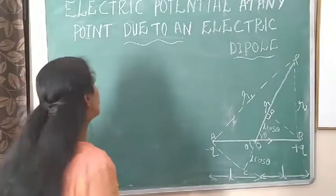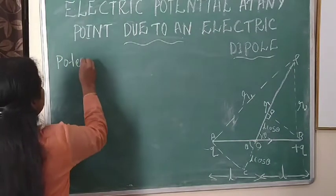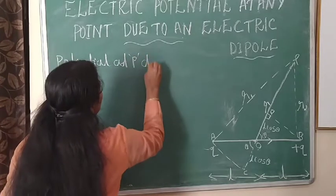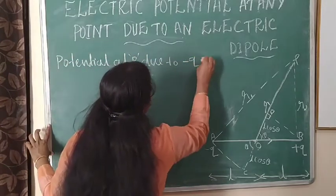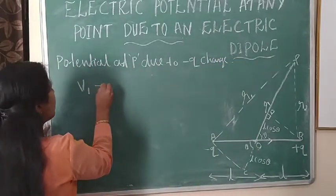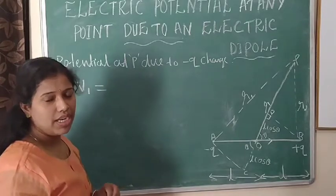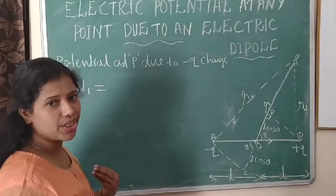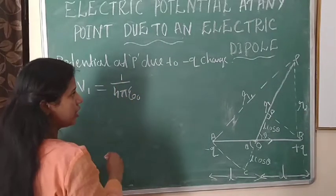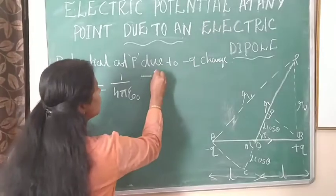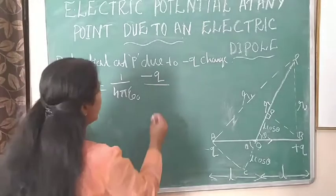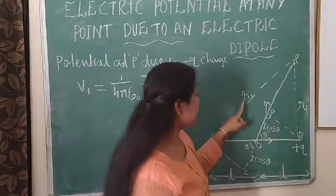Our first equation: potential at P due to minus Q charge. We represent it by V1. From the last class, V1 is equal to 1 by 4 pi epsilon naught, and since the charge is minus Q, we write minus Q divided by the distance R1.